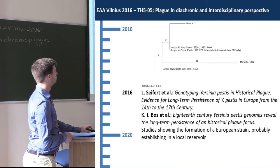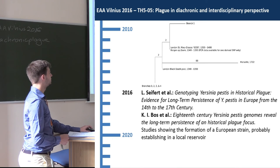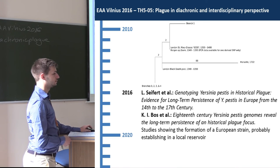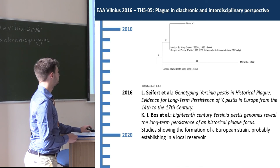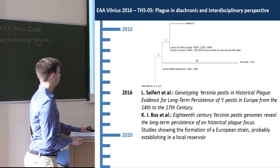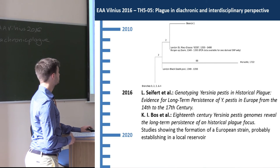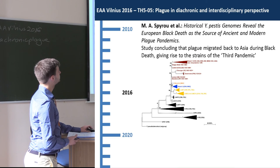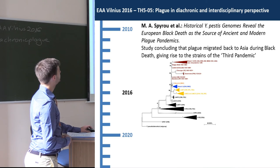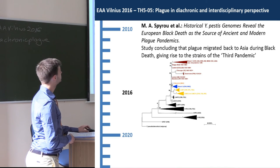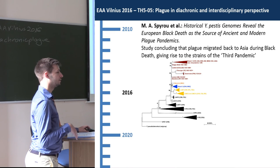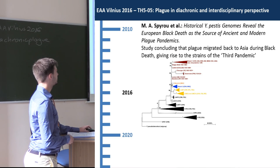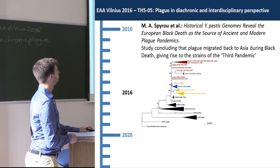Then two publications by Seifert and colleagues and Bos and colleagues on plague in the late medieval and early modern period showed that strains were probably staying in Europe, possibly establishing local reservoirs. Finally, another study by Spyrou and colleagues, following Bos et al., showed that strains were already diverging within Europe and that a European strain likely traveled back to Asia from the second pandemic to form the third pandemic later.